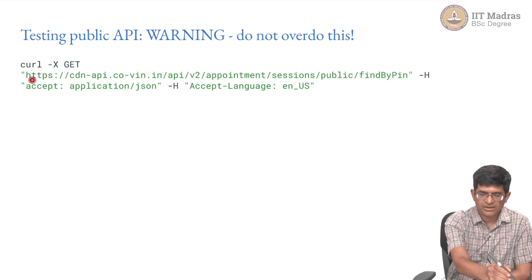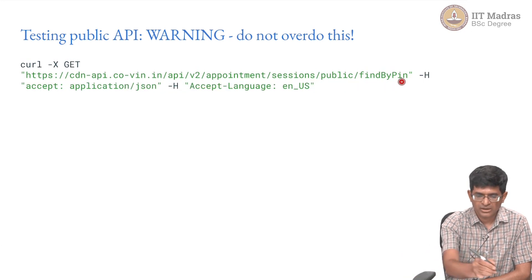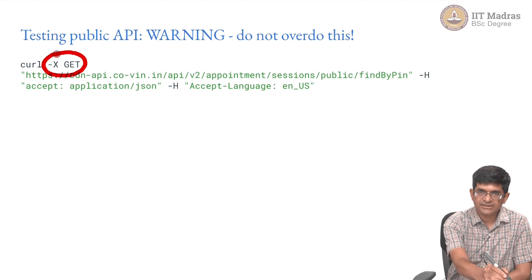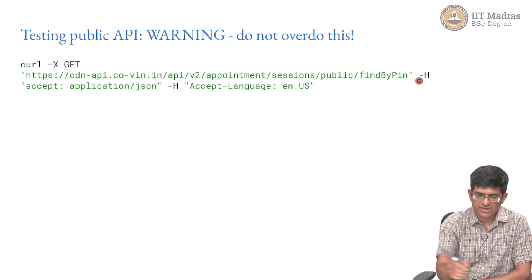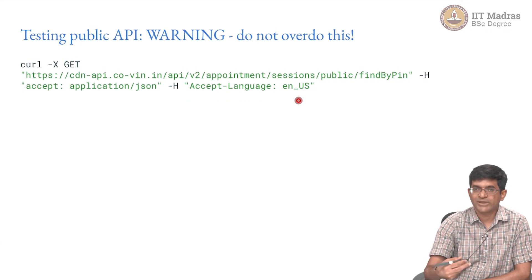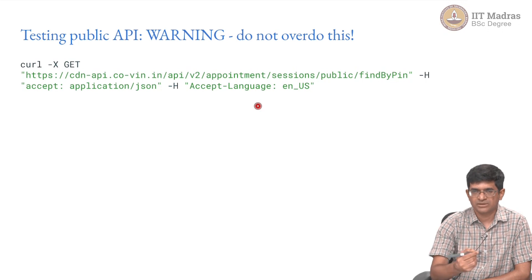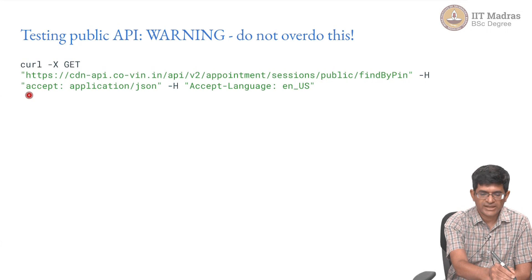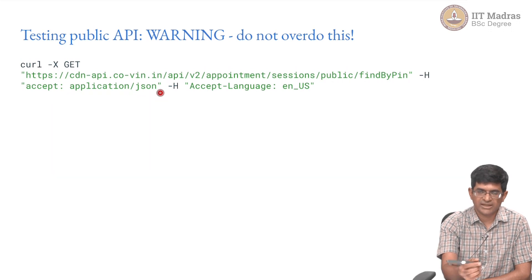Coming back to the API, it makes a request to the URL we saw earlier. I am explicitly using -X GET to indicate that the request should be a GET request — that is the default, but you could also change it to POST. There are also -H values which add header information to the request. For example, it adds a line saying I am willing to accept application/json as the output, and also that I am willing to accept English language output — you could change this to Hindi or other languages that CoWIN supports.